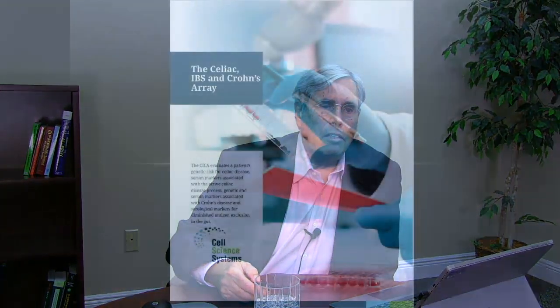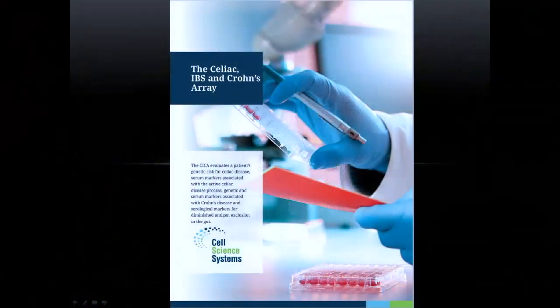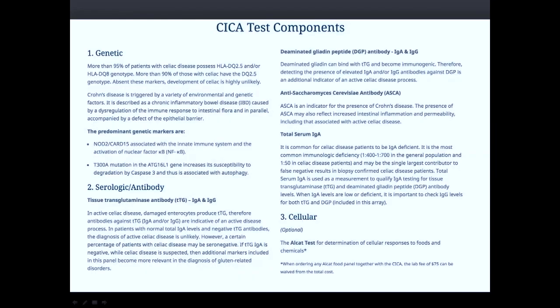We have an assay that we call the CECA — the Celiac, IBS, and Crohn's assay — which has a number of different markers in it. Some of those are genetic markers for identifying risk, whether a person is at risk for developing celiac disease.